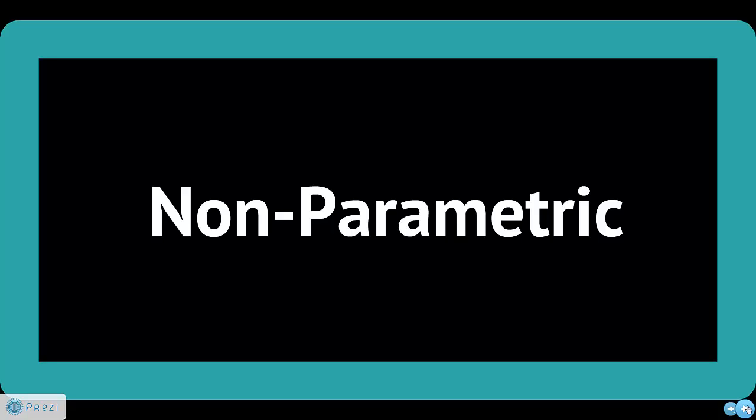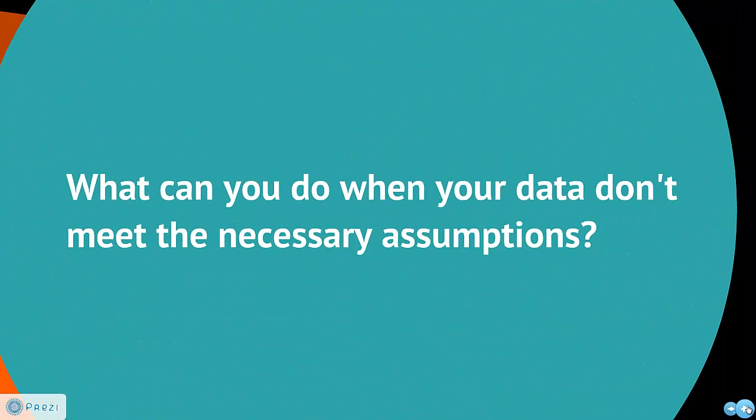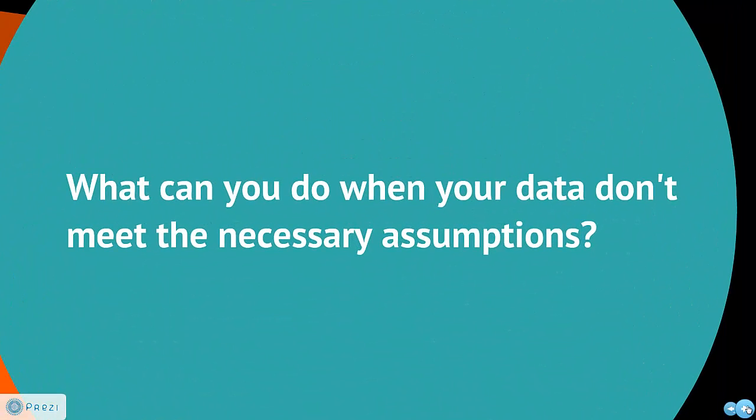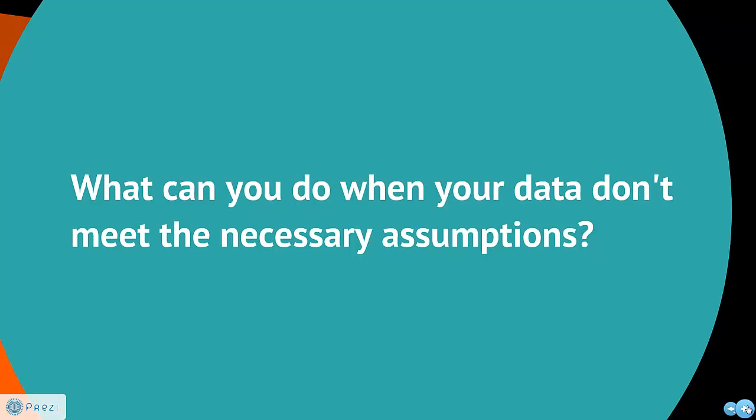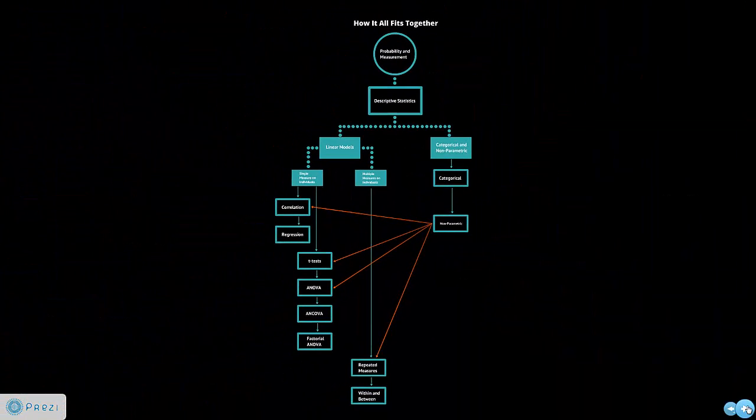When we have problems where sometimes our data don't meet necessary statistical assumptions to carry out all of our linear model tests, well what do we do? Do we just throw in the towel and say there's nothing we can do? No. What we do is you can actually use nonparametric statistics to solve some of the problems for correlation, t-tests, ANOVAs, repeated measures. When your linear models don't work out, you can use nonparametric statistics.